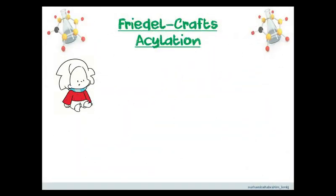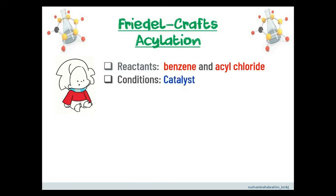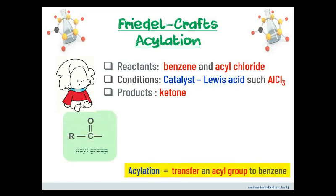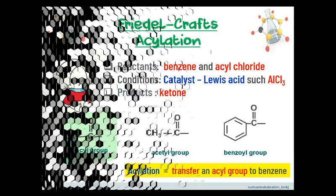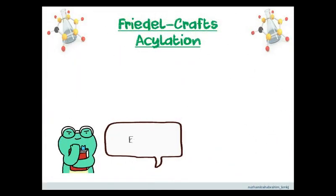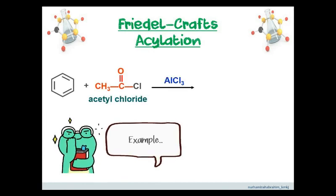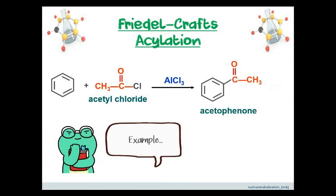The last reaction is Friedel-Crafts acylation, with acyl chloride as reactant in the presence of a Lewis acid, where the product usually contains a ketone functional group. Acylation means to transfer an acyl group to benzene. For example, benzene reacts with acetyl chloride in the presence of AlCl3, and the products formed are acetophenone and HCl.